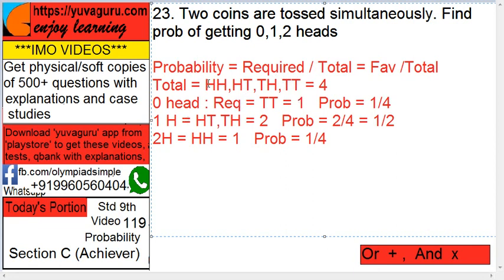One head. So HT or TH. So two outcomes possible. Probability equals to two by four, that is one by two.